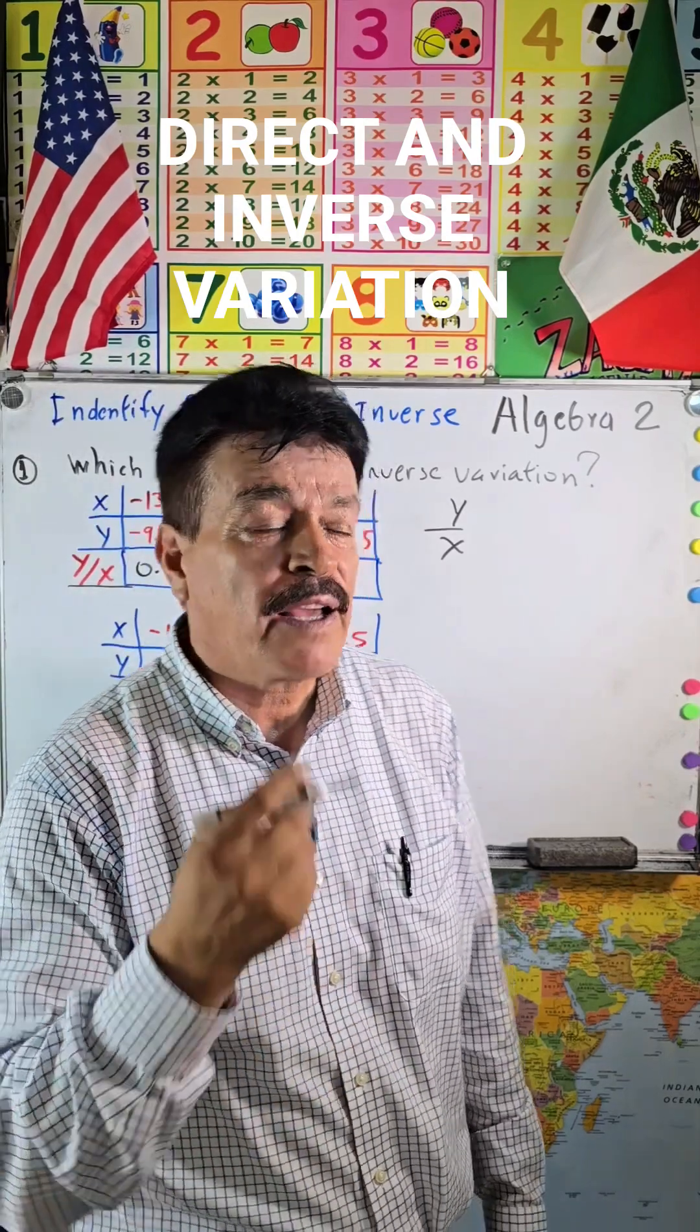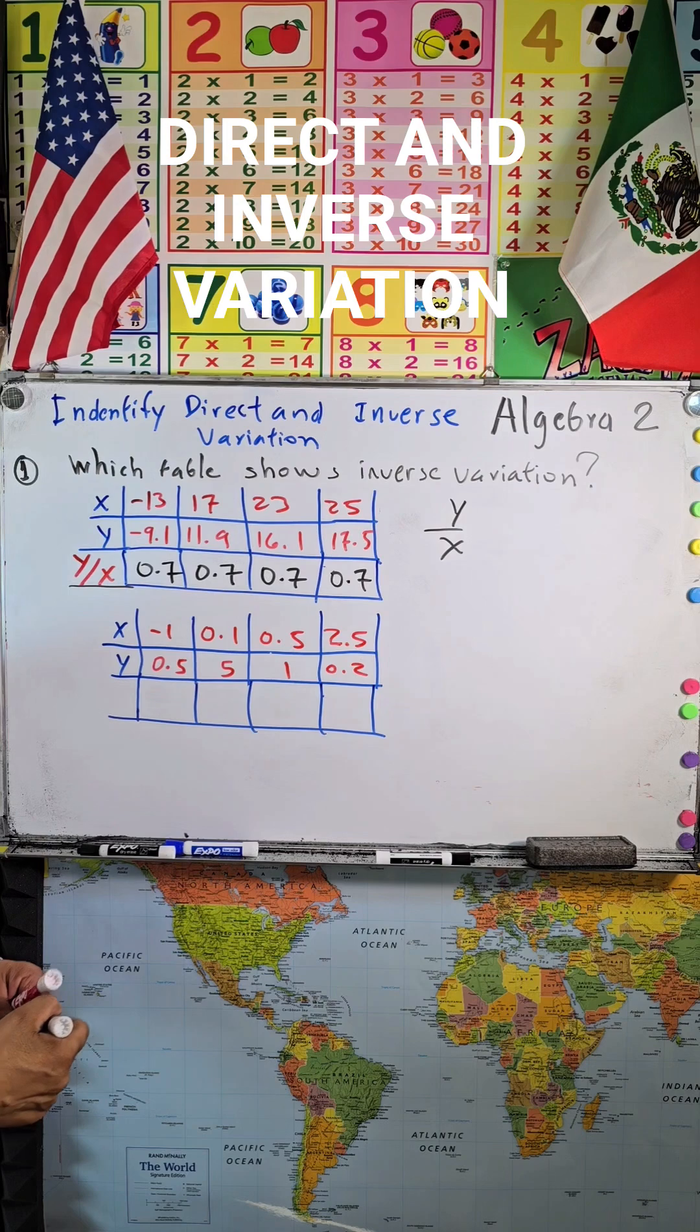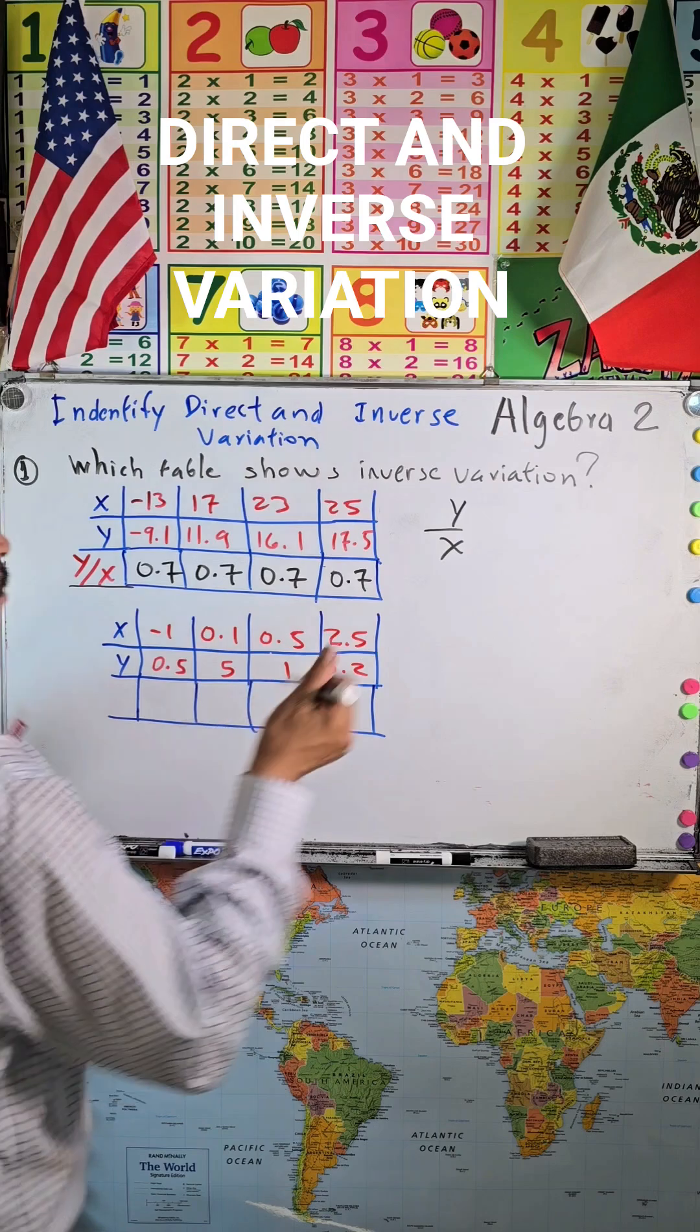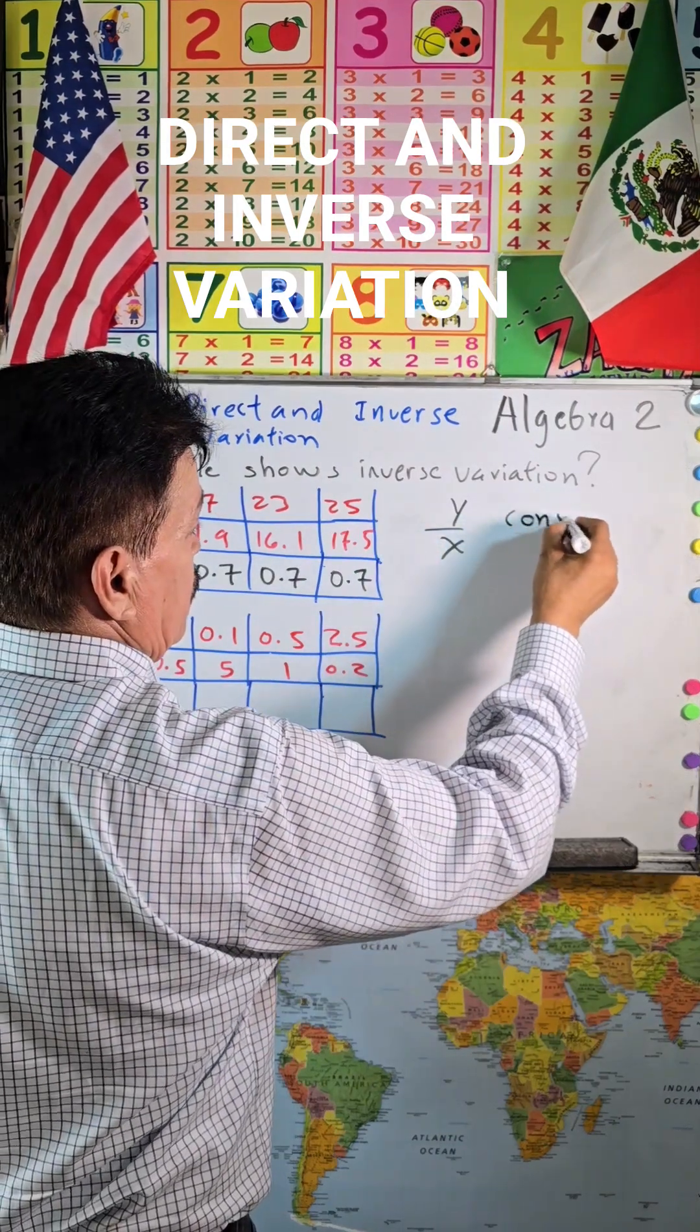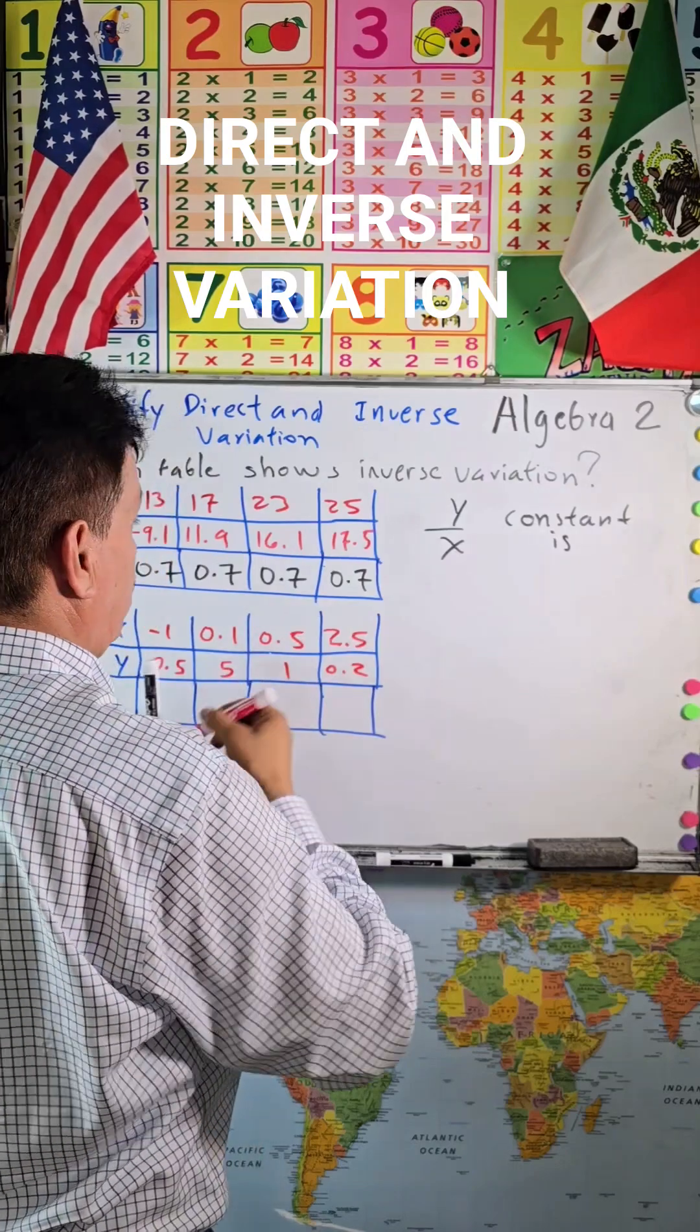17.5, so again it's 0.7. So this first one, the constant is 0.7.